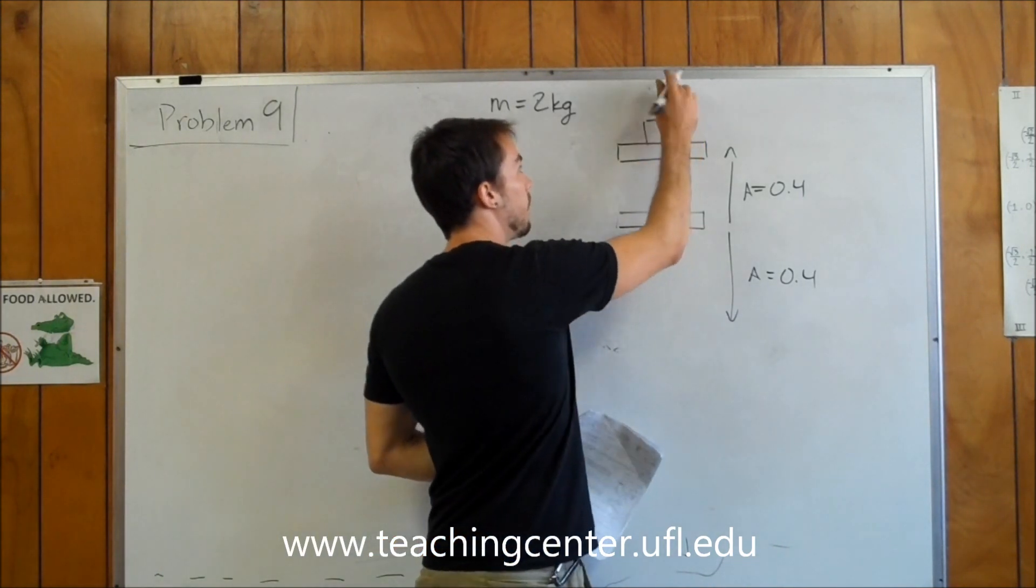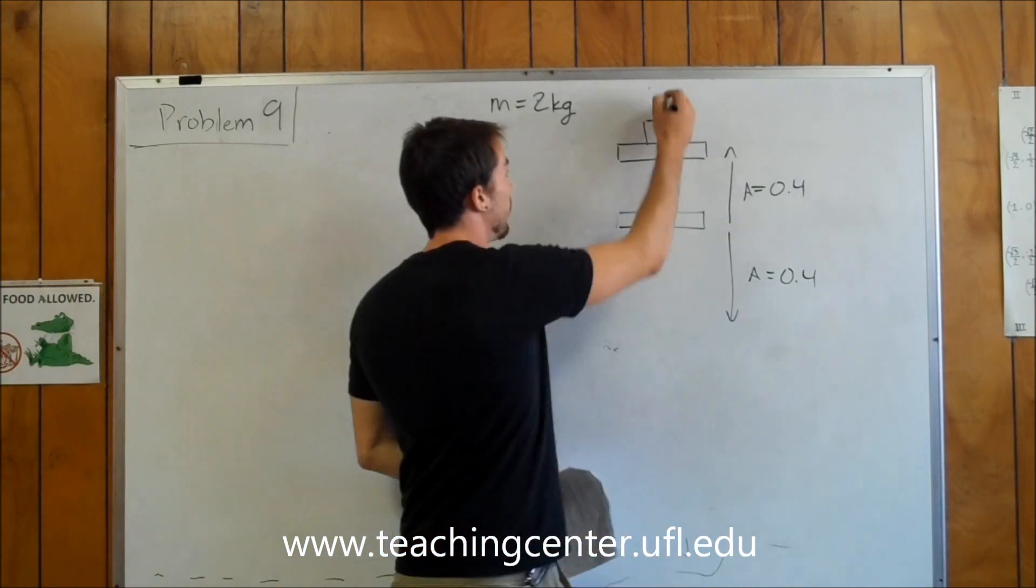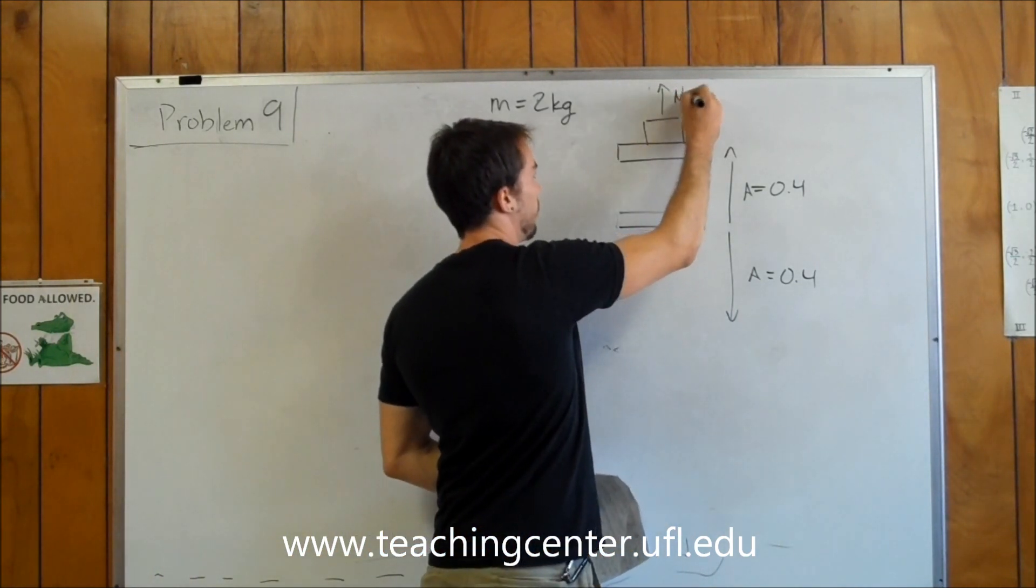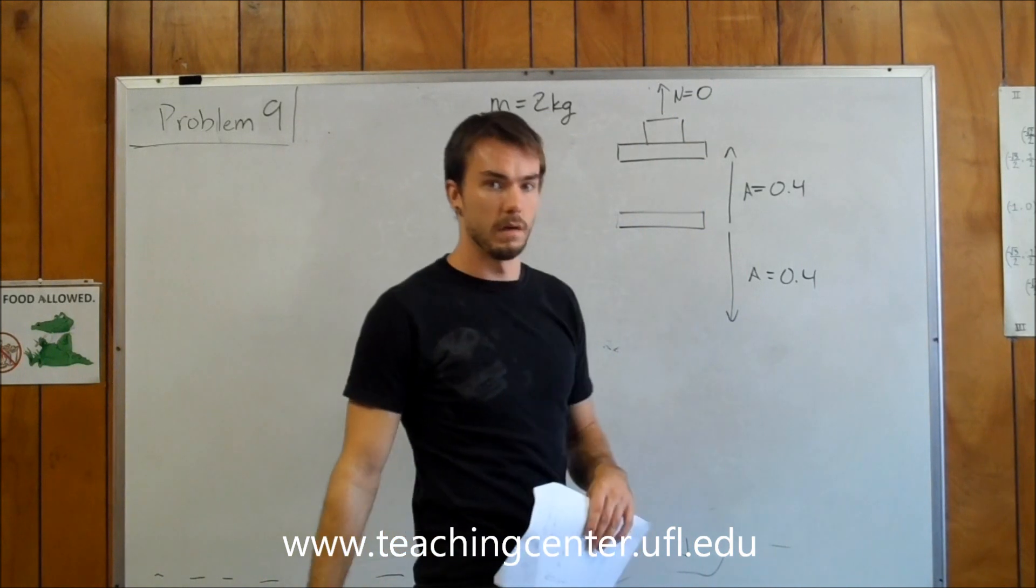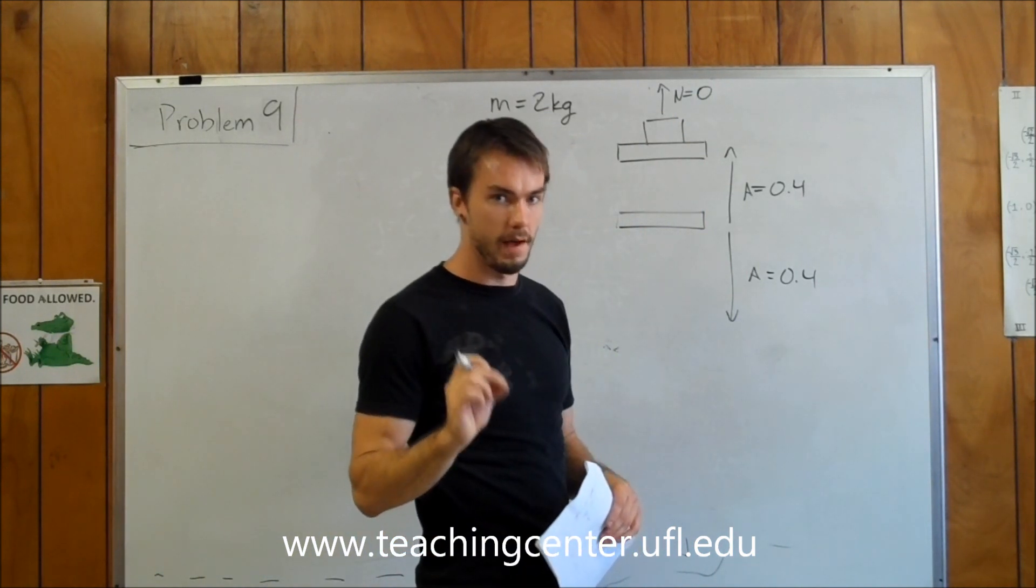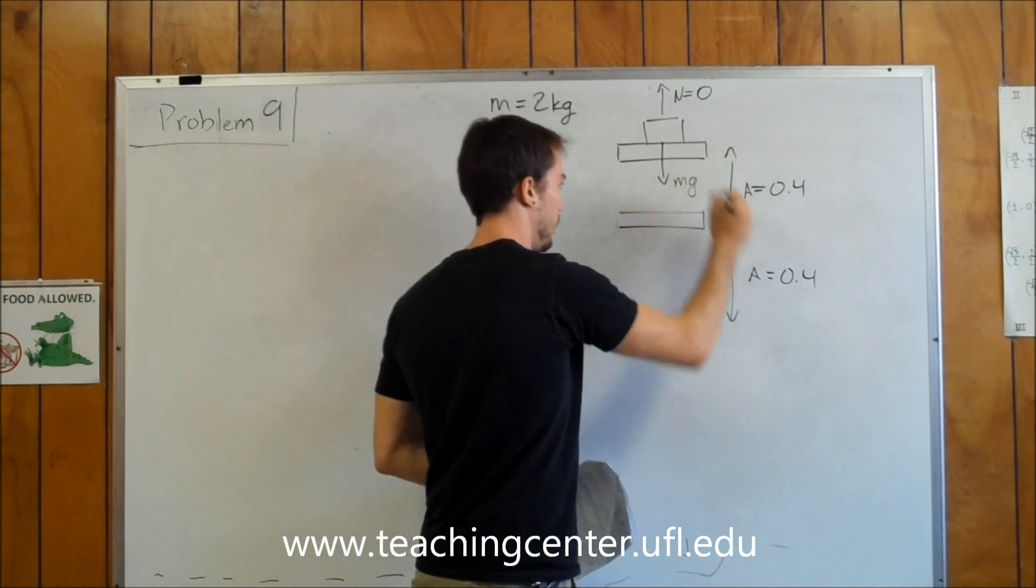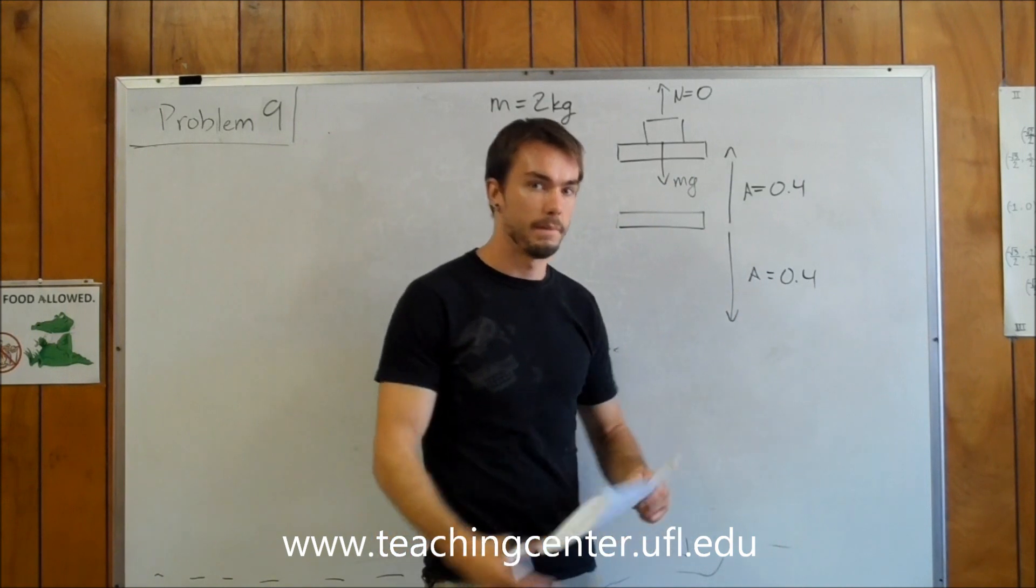Whenever you have something that's about to fall off, like in your rollercoaster problems, that's when the normal force, which is normally there, equals zero. That's at the very point where it's going to start to rise off the platform. We also always have our force of gravity pulling us downwards.